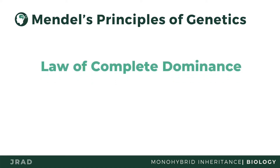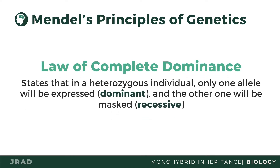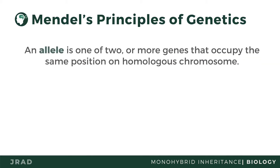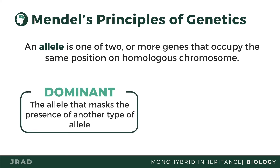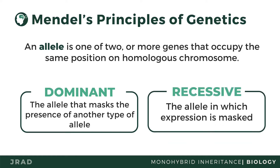The law of complete dominance states that in a heterozygous individual, only one allele will be expressed and the other one will be masked. An allele is two or more genes that occupy the same position on a homologous chromosome that covers the same trait. A dominant trait is the allele that masks the presence of another type of allele. On the other hand, a recessive trait is the expression being masked.